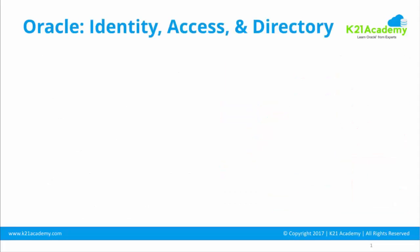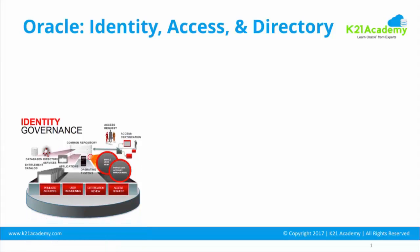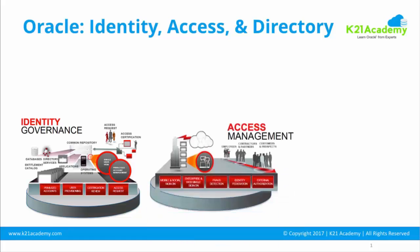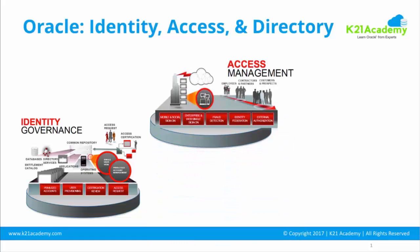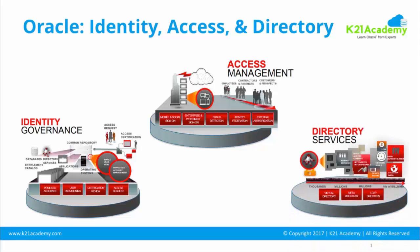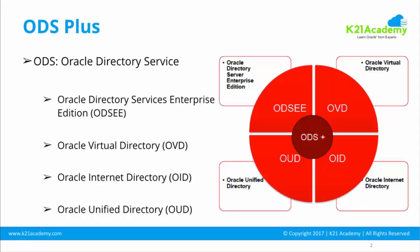Quick recap: Oracle Identity and Access Management consists of Identity Governance — covering user management, provisioning, reconciliation, attestation, and certification — and Access Management, which includes products like Oracle Access Manager, federation, authentication, authorization, and single sign-on. Directory Services are for storing users and groups. For new LDAP implementations use Oracle Unified Directory; Oracle Virtual Directory provides a proxy layer across multiple LDAP servers.